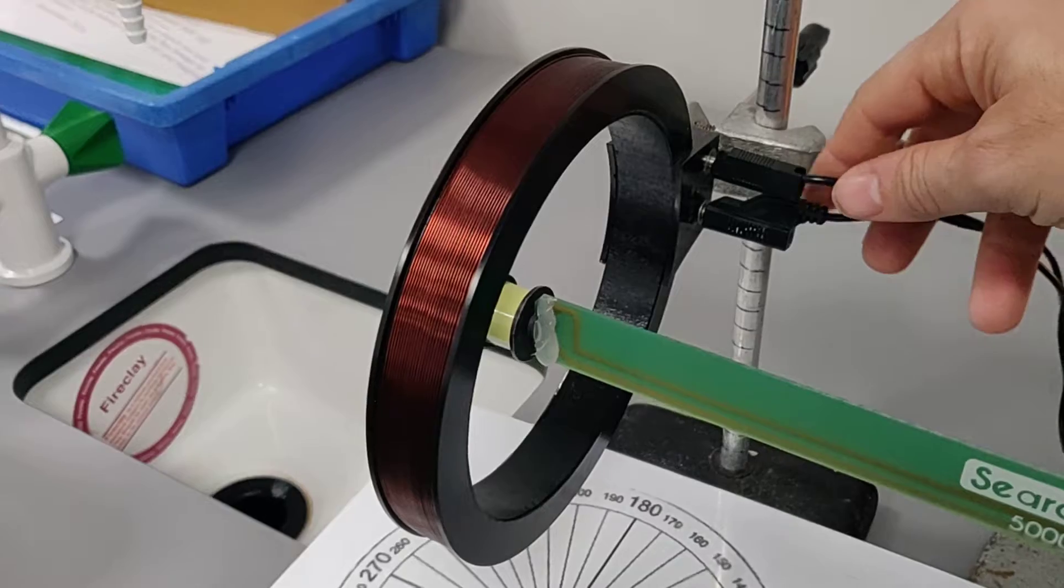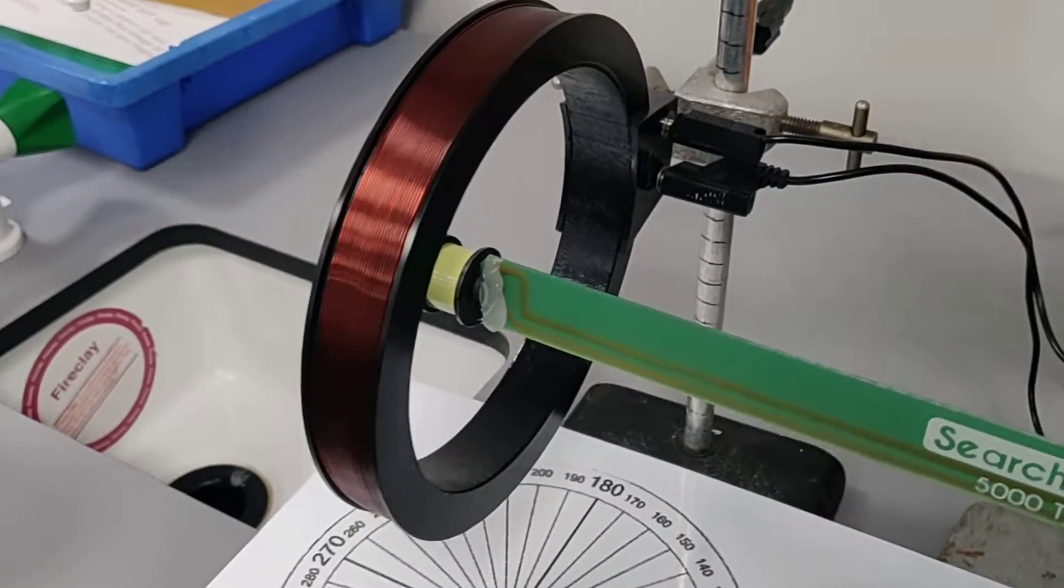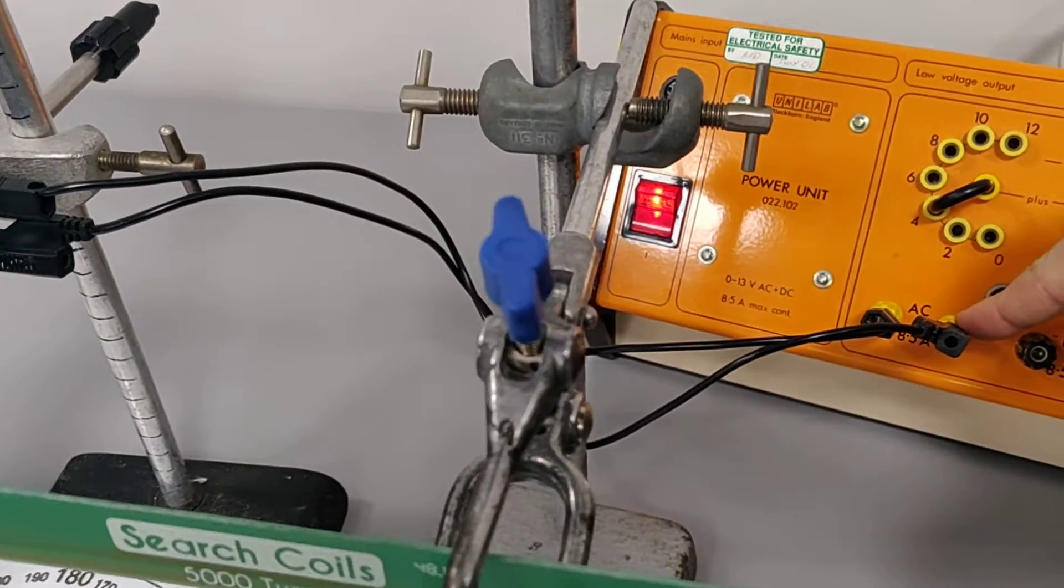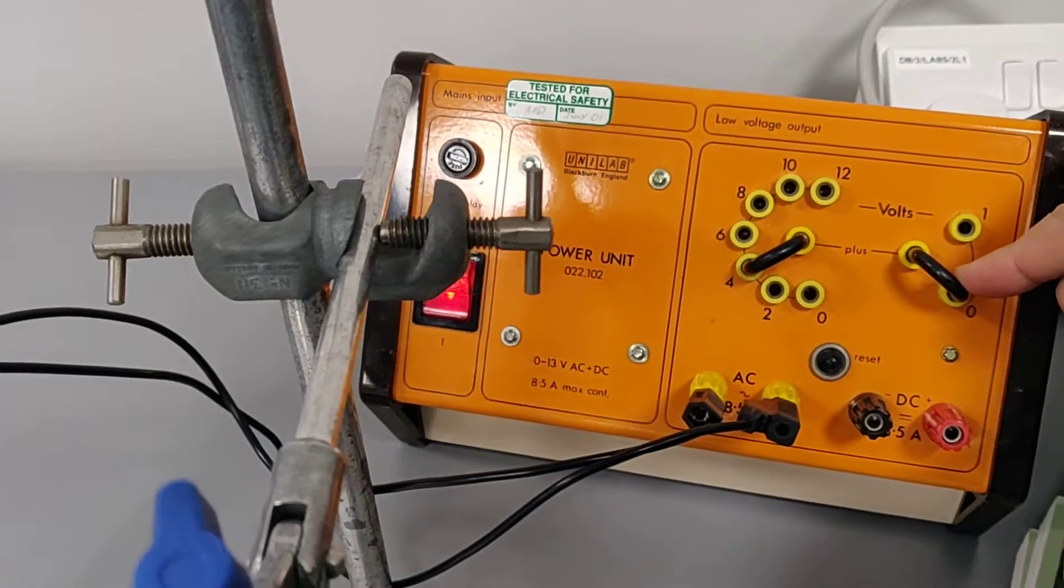And we're connecting the Helmholtz coil, the coil of wire there, to a power pack. We're using AC, and we're using 4 volts from a normal lab power pack.